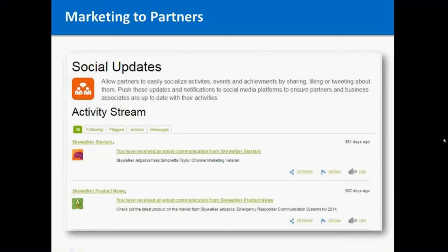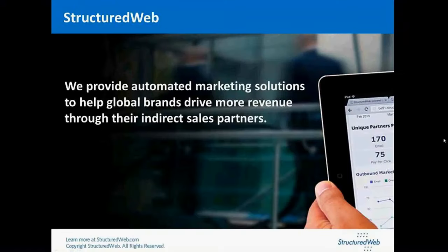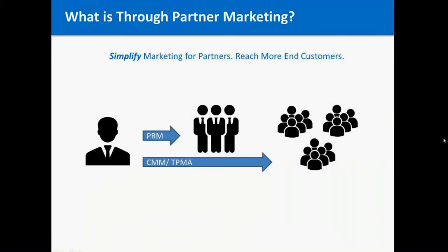Thanks, Mike. That was a great overview of the PRM. What I'll do now is jump in and explain the CMM and the channel marketing management aspect. A quick overview of Structured Web: what we do is help provide automated marketing solutions to help global brands drive more revenue through their indirect sales partners. Once we start to market to the partners with the PRM solution, it's really only half the battle in making sure that your partners are enabled to sell and market to their end customers. Through the channel it's not only enough to capture partner mind share through the PRM — you also need to utilize the CMM or the through-partner marketing automation tool to capture customer mind share.